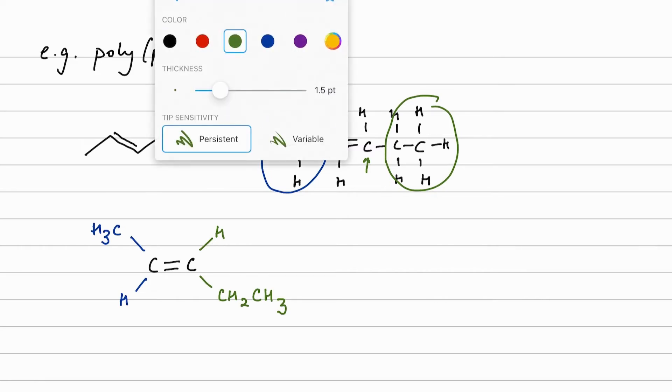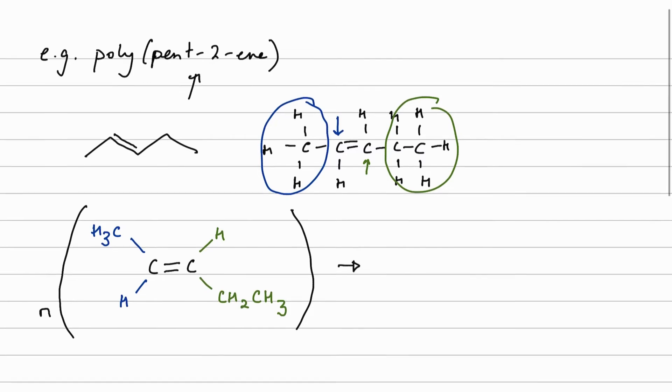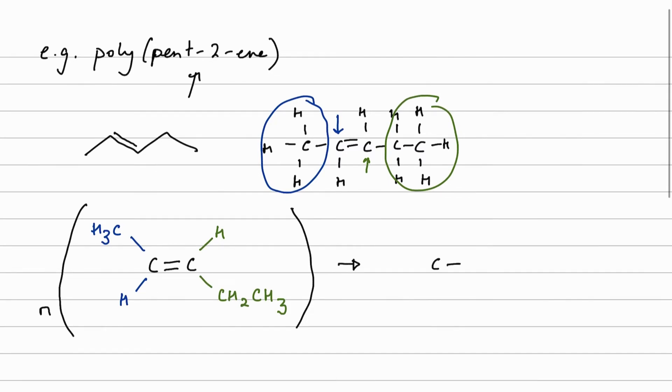It is much more straightforward to draw my repeat unit. So I'm going to indicate that I have lots of them. Brackets and an N. And my repeat unit has got two carbon atoms. It has hanging bonds.